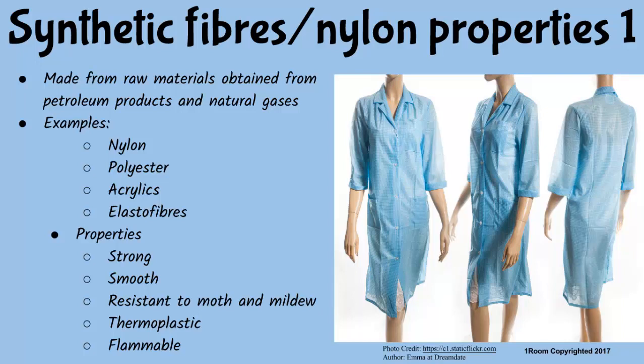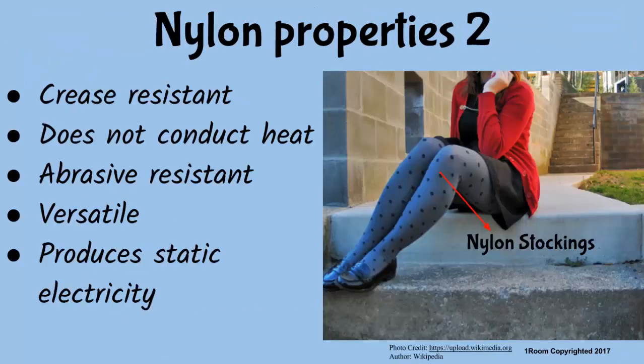Nylon has many uses, but first let's understand its properties. Nylon is very strong, smooth, resistant to moths and mildew, and does not shrink. It is also thermoplastic and flammable since it comes from petroleum products. Nylon sheds creases because of its great elasticity and resistance, and does not conduct heat or absorb moisture.